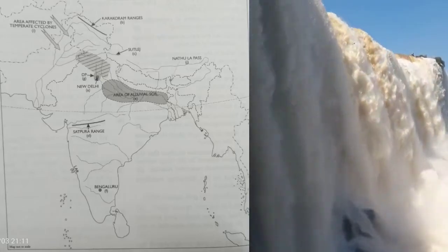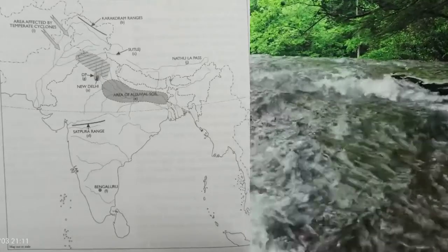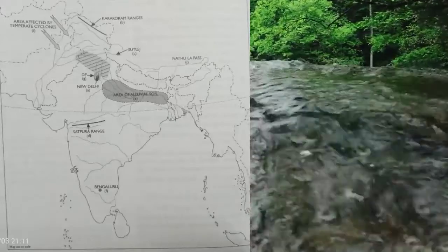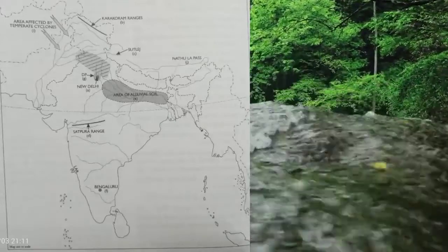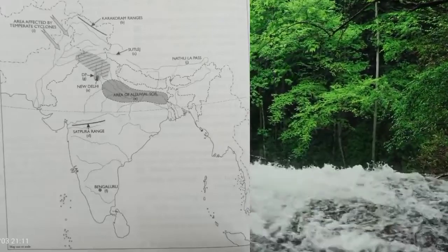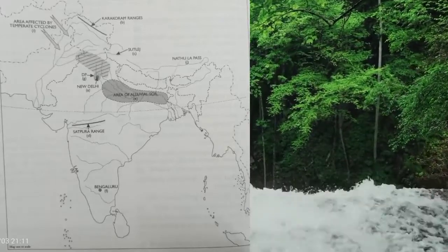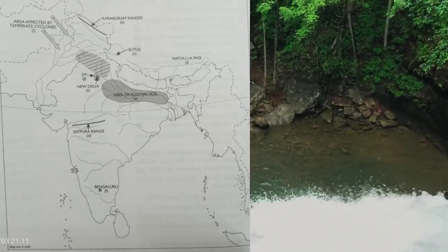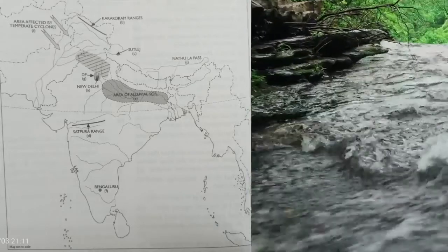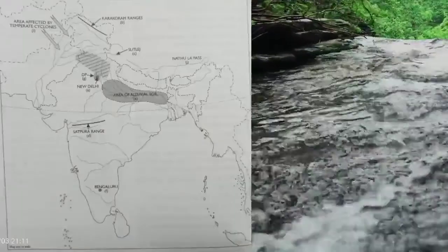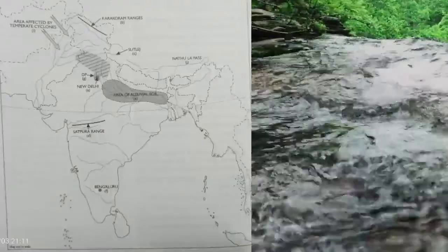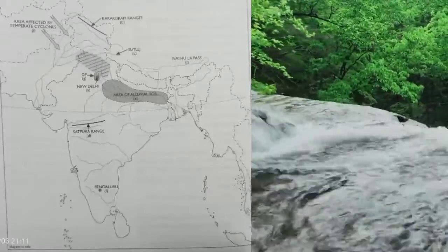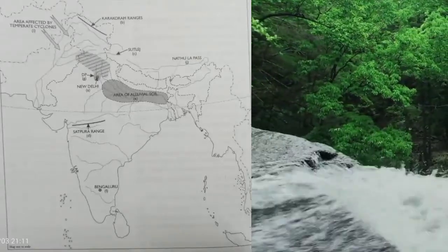'F' — the capital of India — mentioned. 'G' — mark and label the most densely populated state. 'H' — print 'LAR' over an area with a low annual range of temperature. 'I' — one area affected by tropical cyclone. 'J' — Nathu La Pass.